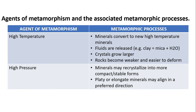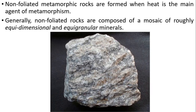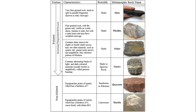This table summarizes the metamorphic processes under the agents of metamorphism — high temperature and high pressure. Non-foliated metamorphic rocks are formed when heat is the main agent of metamorphism; they are generally composed of a mosaic of roughly equidimensional and equigranular minerals. One example is quartzite, which appears massive or granular without the characteristic parallel mineral grains seen in foliated rocks. The table shows the differences between foliated and non-foliated rocks as temperature and pressure increase.